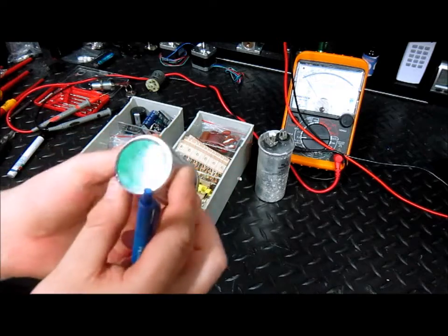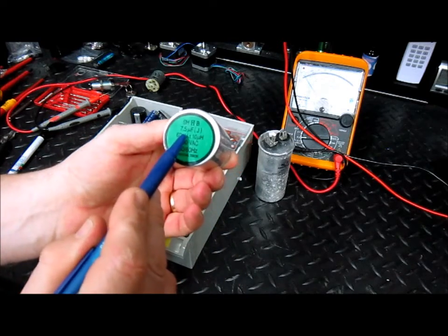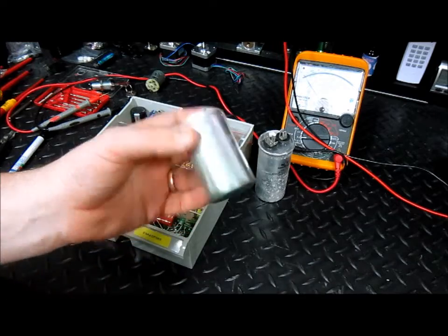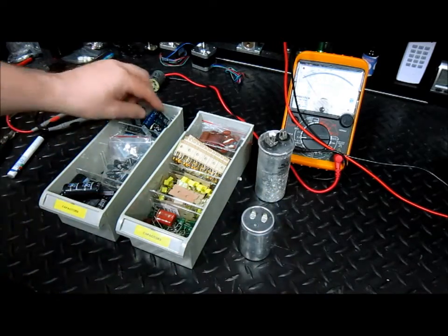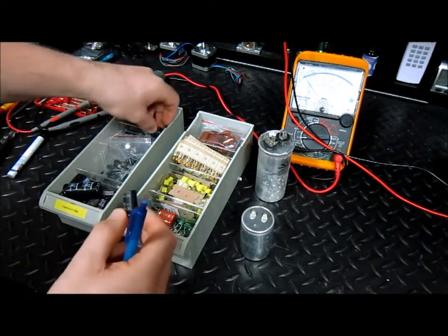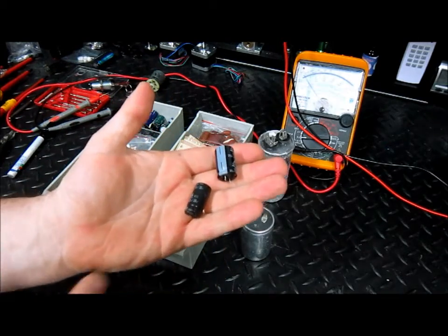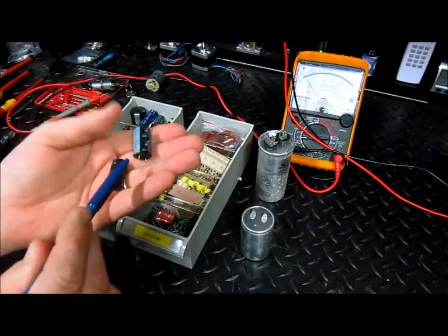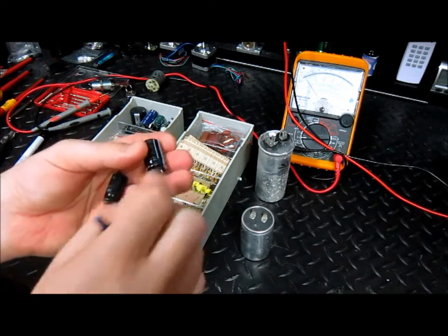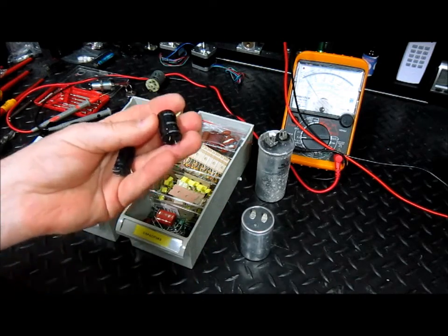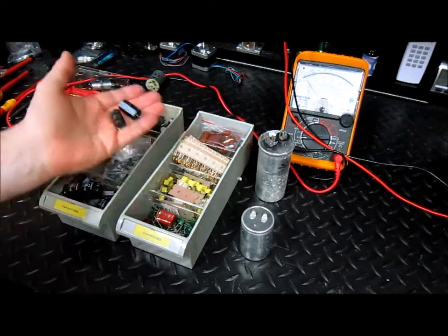Here, found in a microwave oven, 7.5 microfarads, 60 hertz, 400 volts AC. Here we have smaller electrolytic capacitors. These are found in most printed circuit boards. Electrolytic capacitors have a polarity, negative and positive. It's very important to connect them in the circuit the correct way.